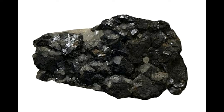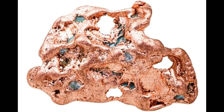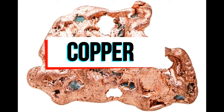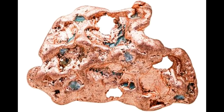Most metals exhibit this property, and that is the reason why gold, silver, or platinum can be hammered into thin sheets. But if you consider the metal titanium, it breaks into pieces when tried to hammer. Besides titanium, antimony and bismuth break when exposed to shear stress. Thus, they can be considered as exceptions to the rule that metals are malleable.